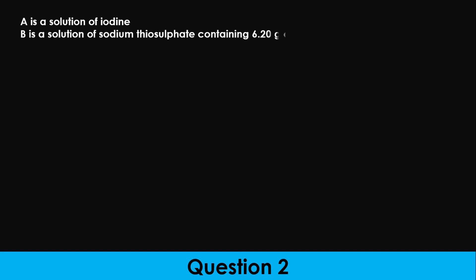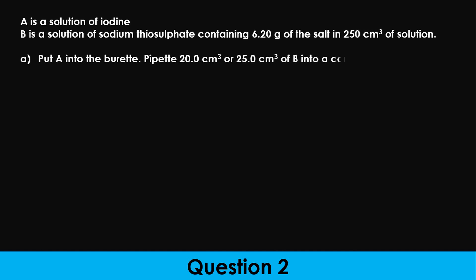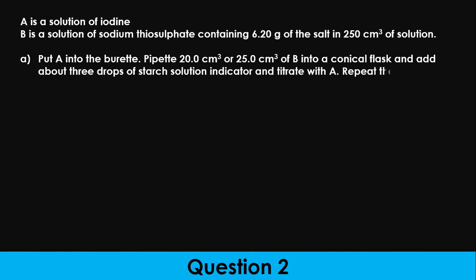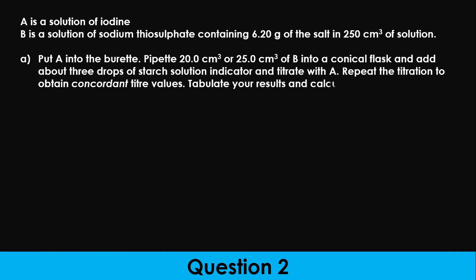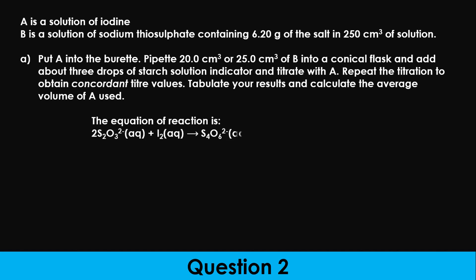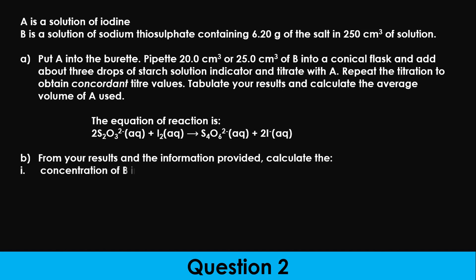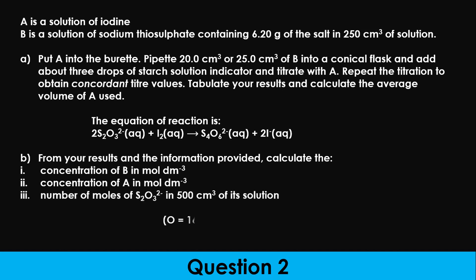A is a solution of iodine. B is a solution of sodium thiosulfate containing 6.2 grams of the salt in 250 cm³ of solution. Put A into the burette. Pipette 20 or 25 cm³ of B into a conical flask and add about 3 drops of starch solution indicator, and titrate with A. Repeat the titration to obtain concordant titer values. Tabulate your readings and calculate the average volume of A used. From your results, calculate the concentration of B in moles per dm³, the concentration of A in moles per dm³, and the number of moles of thiosulfate ions in 500 cm³ of its solution.